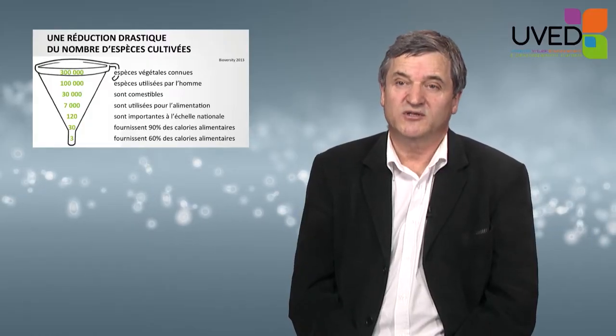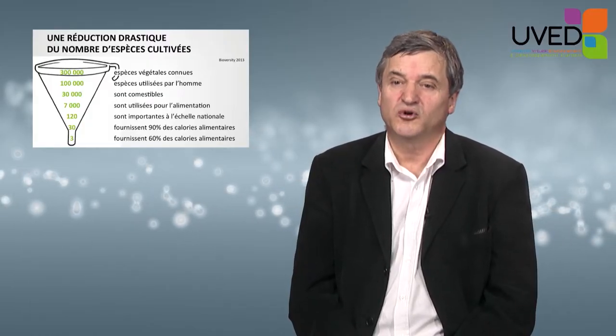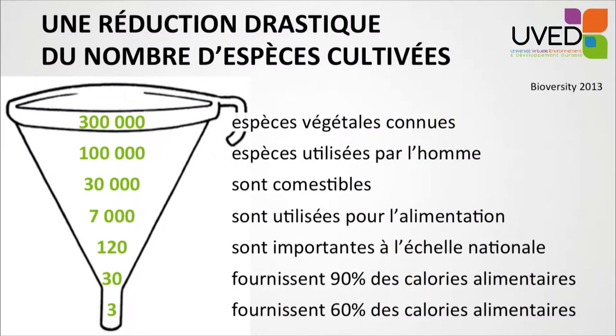During this evolution, one of the main innovations was domestication and selection of varieties and species that provided the best performance. For plant species, from 300,000 species known today, 100,000 of which are used by humans one way or another, 30,000 are edible, 7,000 are used for food, and 120 are important on the national scale and used in statistics by the FAO.